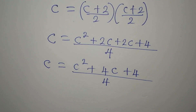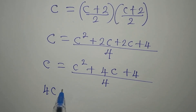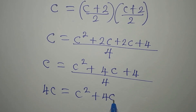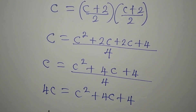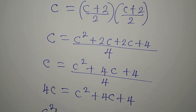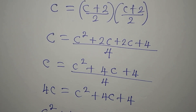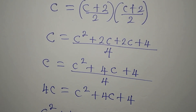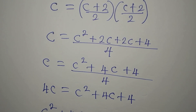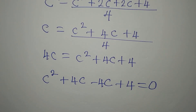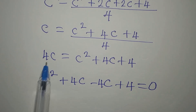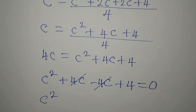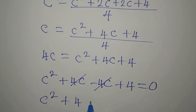If I cross multiply, I will now have 4c equals c squared plus 4c plus 4. I want to write c squared first, then plus 4c, this becomes minus 4c, then we have plus 4, and everything equals 0. So c squared comes first, this 4c and negative 4c go, and that leaves us with c squared plus 4 equals 0.